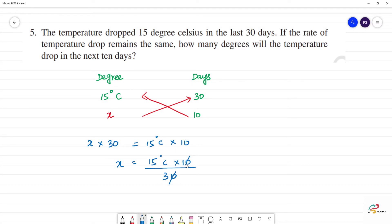So, cancel the 0s, cancel the 3 and 5, 3 times 5 is 15. So, x is equal to 5 degree Celsius.